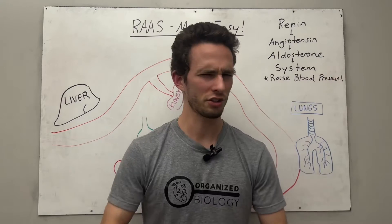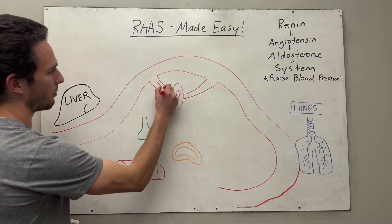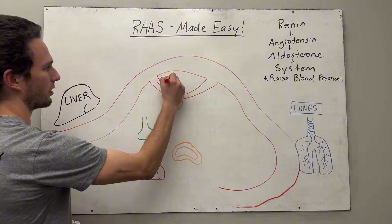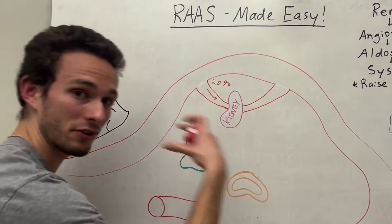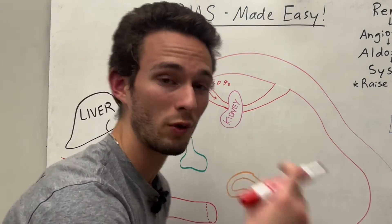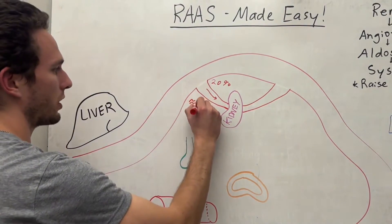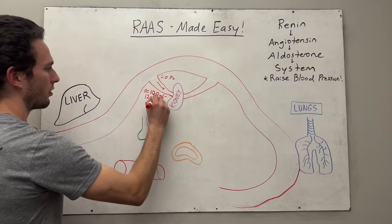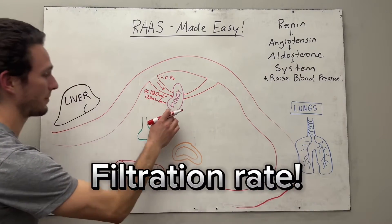And it all starts with the kidneys. The kidneys receive a lot of blood — about 20% of your cardiac output. And when they receive that blood, they're going to have to filter it out at a certain rate, around 100 to 120 milliliters every minute. This is called the filtration rate.